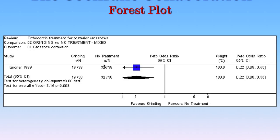The second group was a control group. They also had a posterior unilateral crossbite in the mixed dentition, but were randomly allocated to receive no treatment — they did not receive the intervention of grinding. Again, there were a total of 38 in this group, of which 32 still had a posterior crossbite in the permanent dentition. You can then do a fairly simple calculation called an odds ratio, where you look at the proportions with the outcome in the two groups.